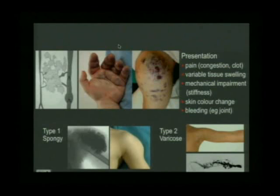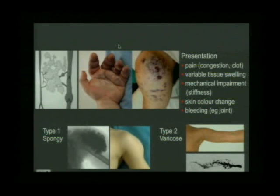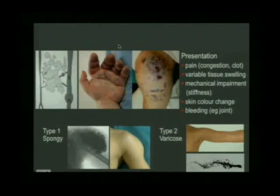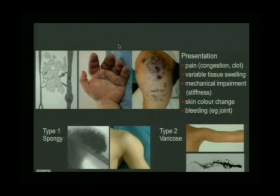The fingers are distended - if the patient holds his hand up and you squeeze them, you can empty the fingers, and when the hand goes down by the side, the fingers and palm refill. Children present with pain because of swelling and sometimes acute blood clot formation, various tissue swellings, and mechanical impairment when malformations occur around joints. Morning stiffness in the legs is quite a common symptom. We have a significant group of children with extensive venous malformations in the leg who have chronic arthropathies in the knee due to intra-articular bleeding.